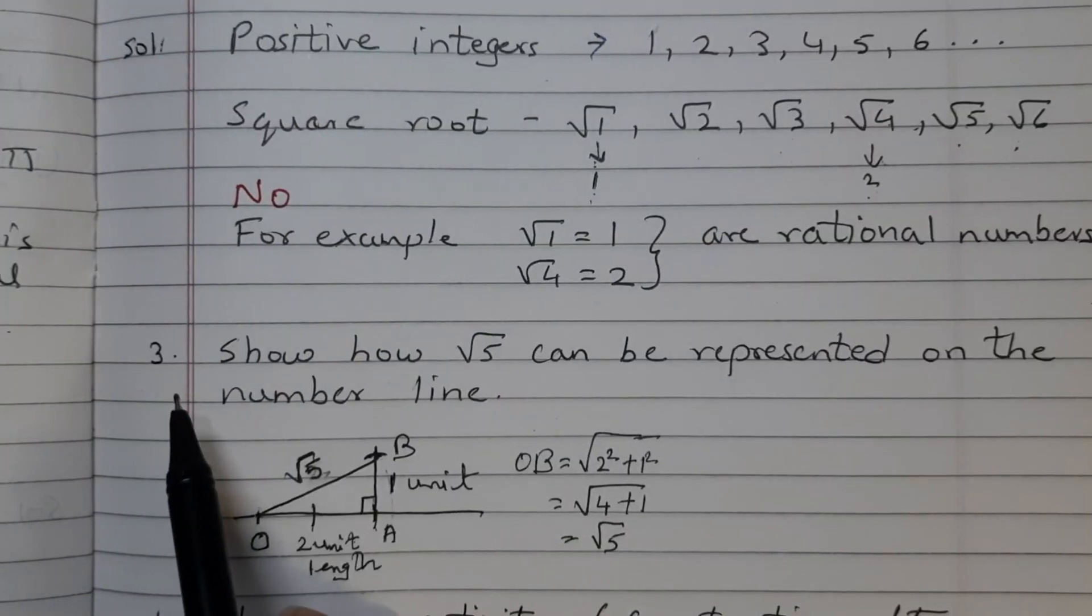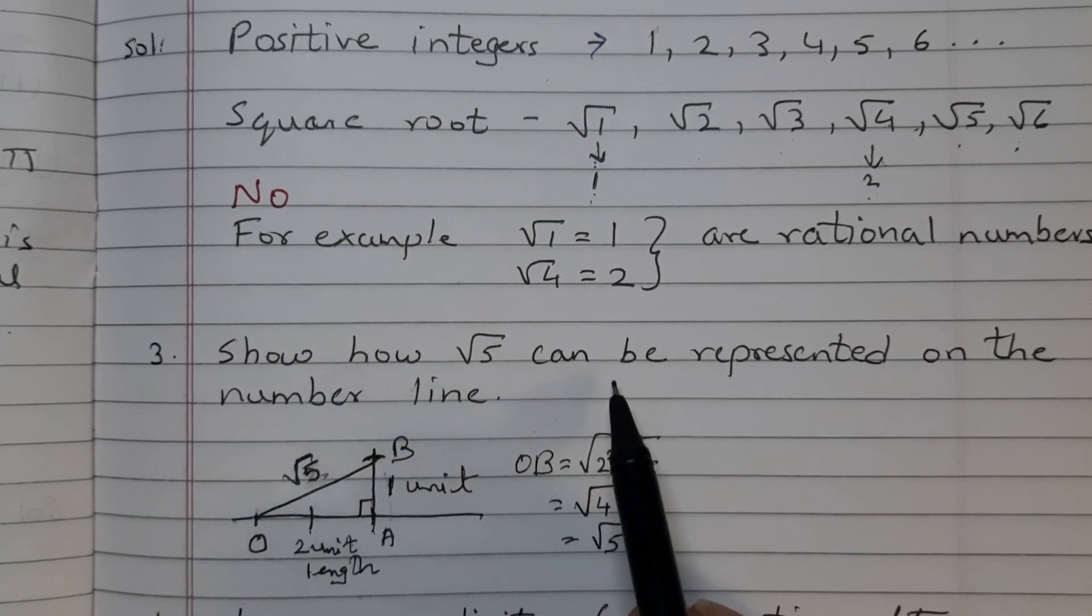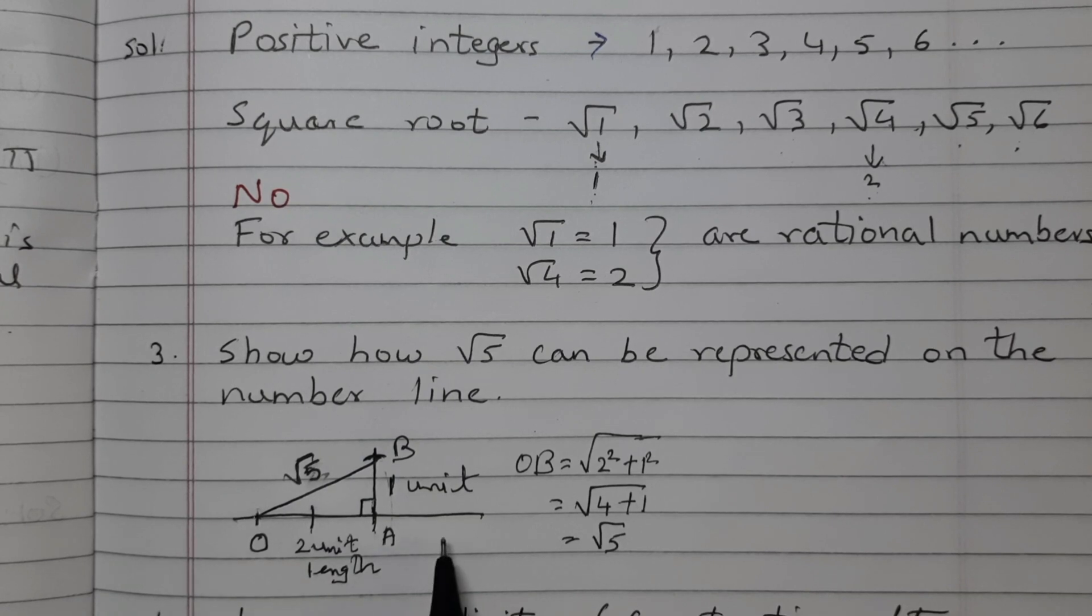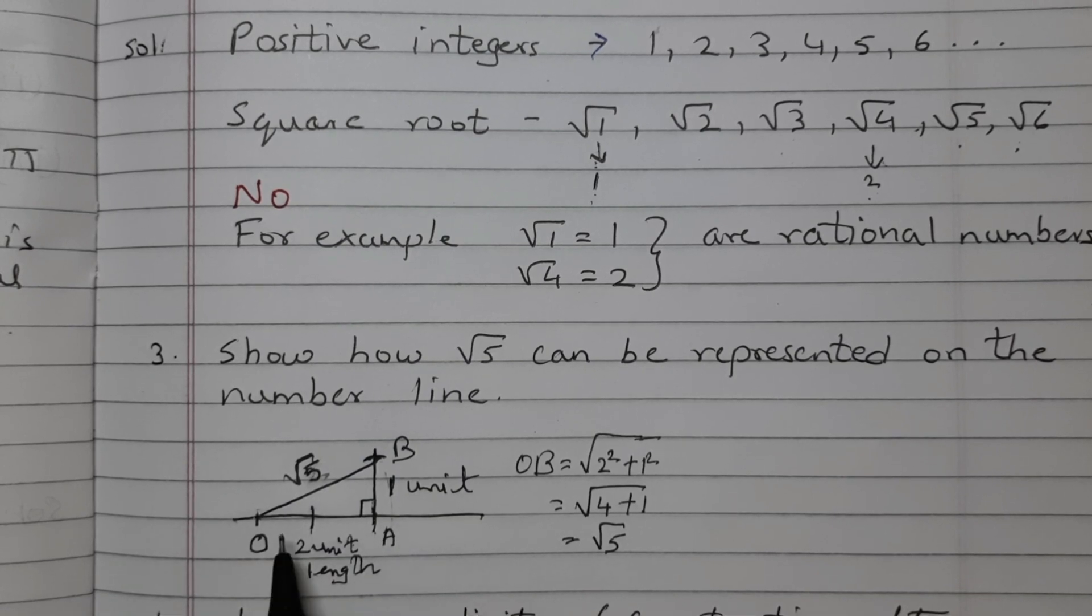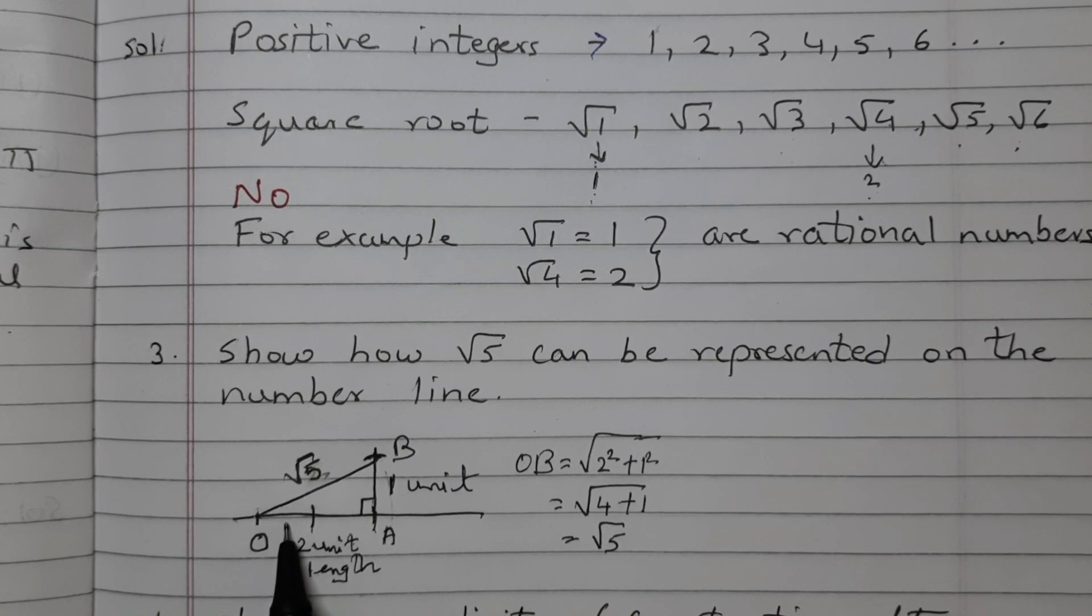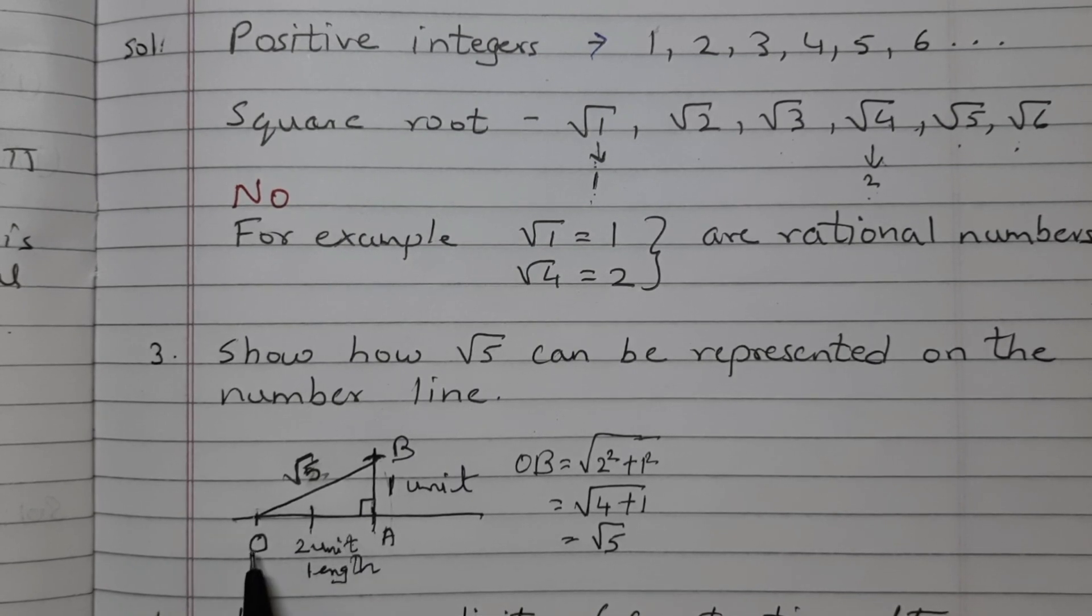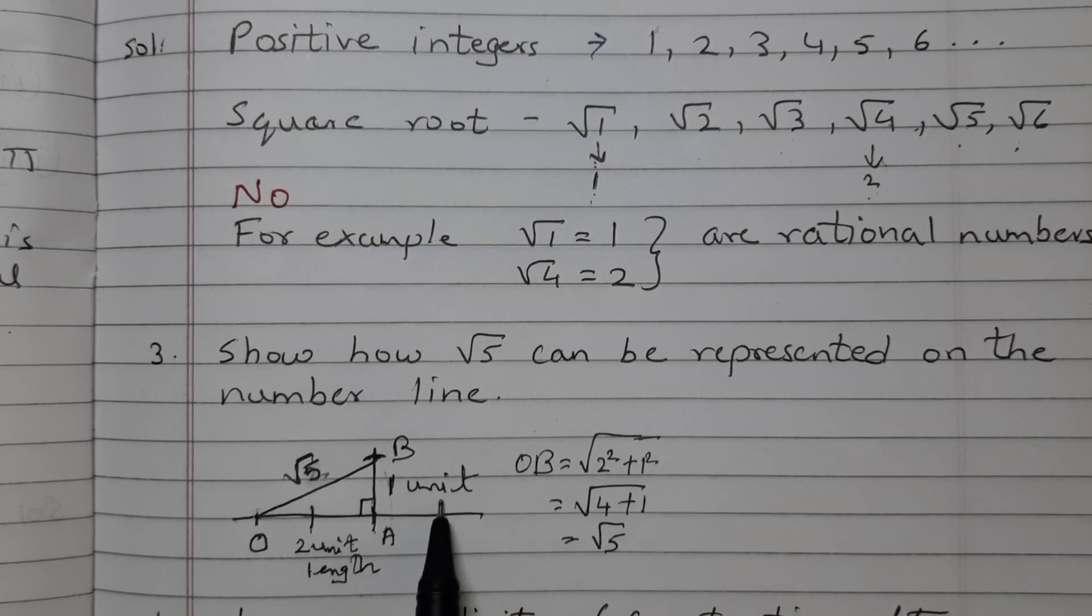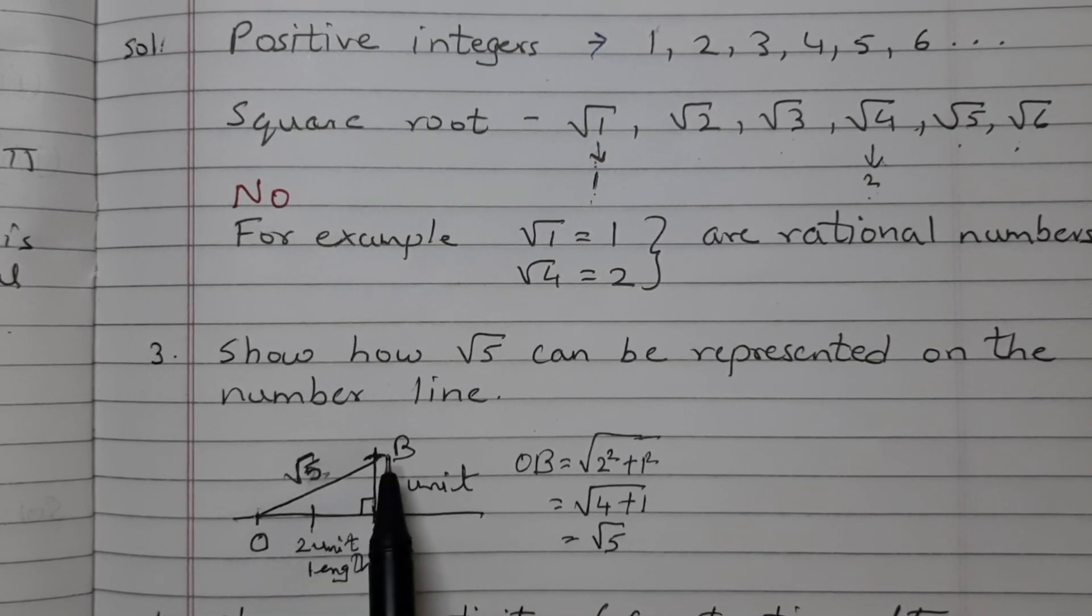Question number 3. Show how root 5 can be represented on the number line. So first draw a number line and then draw line OA of 2 units. This is 1 unit, 2 units. So 2 units on the number line. So this is OA. At A, draw a perpendicular line BA of unit length. This is 1 unit. Join OB.